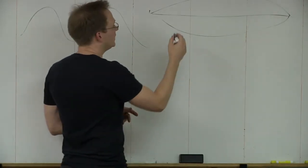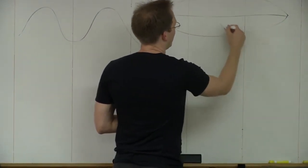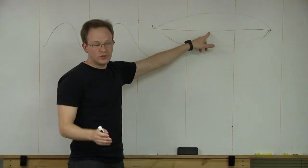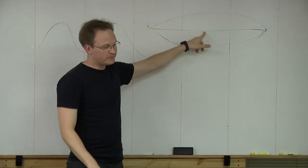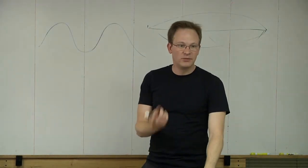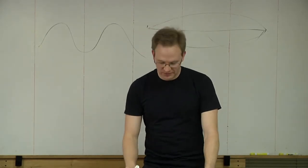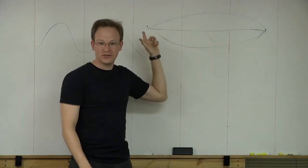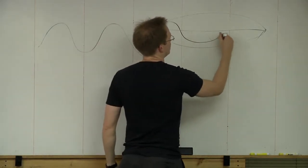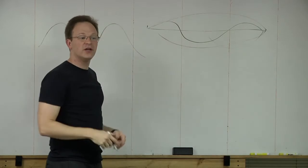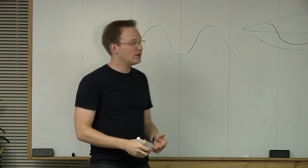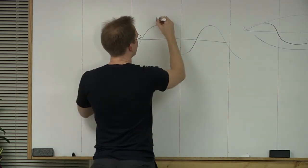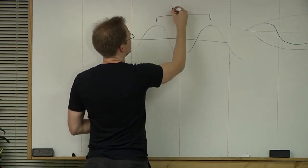The overtones that the string is making is when it's also making a wave with a spot right in the middle, making the octave. On a piano, if you push down a key gently so the hammer doesn't actually hit the string, and you play the same note an octave up, it'll end up resonating in that lower string, because that string can vibrate with the full length of the string, or with half of it, or a third of it. Light waves are pretty similar — it acts like it's going up and down. It's got what's called a wavelength, and the Greek letter lambda is used for that.